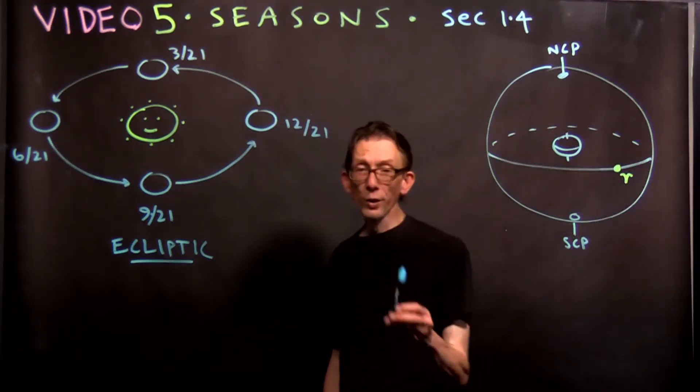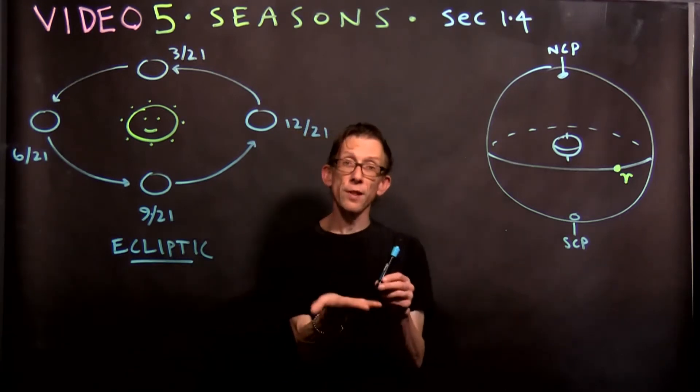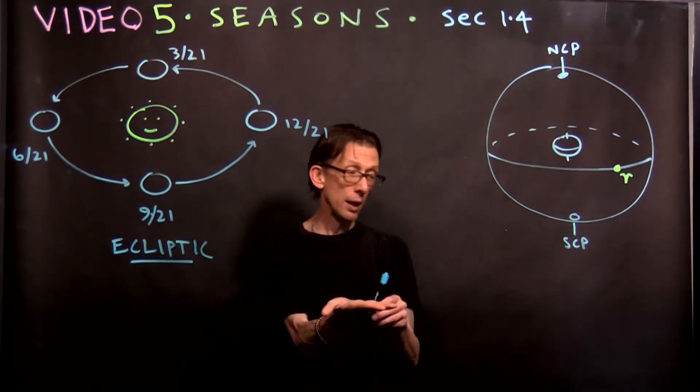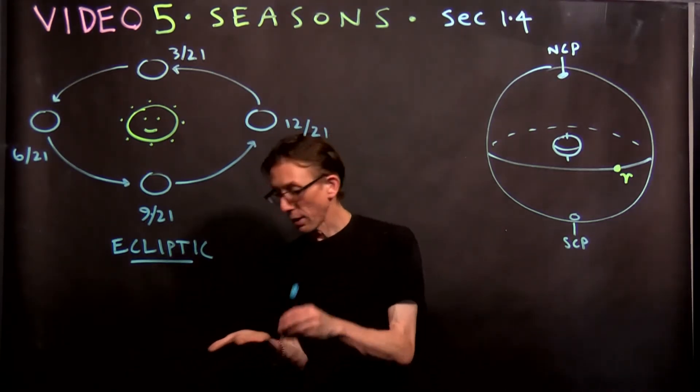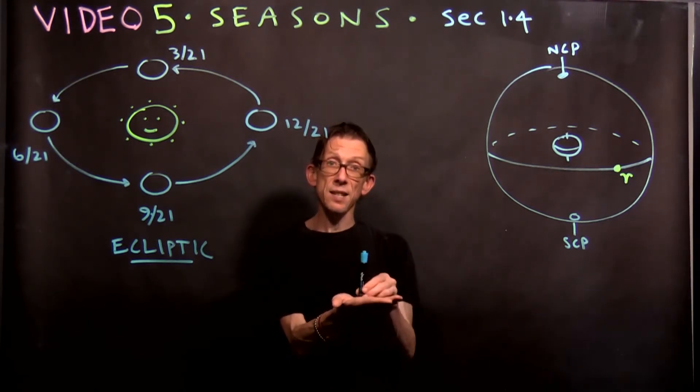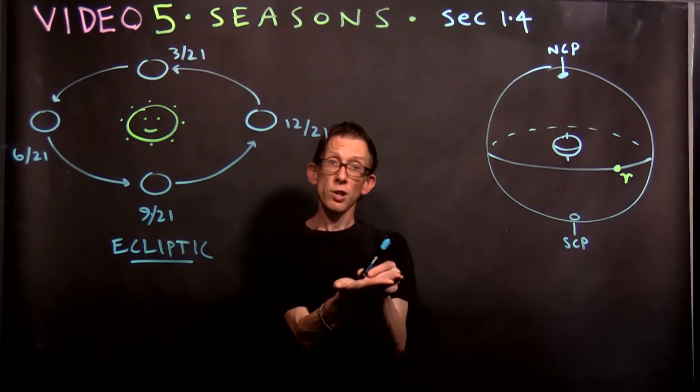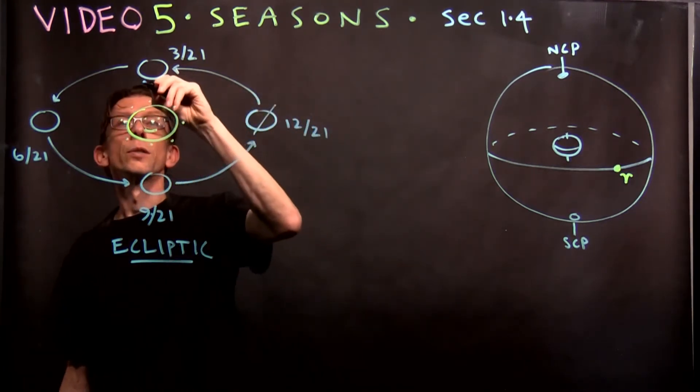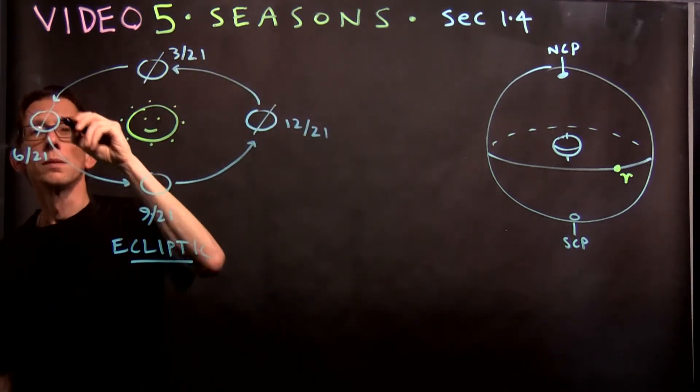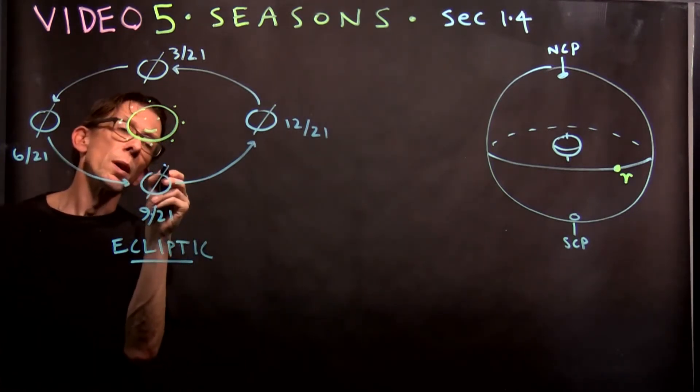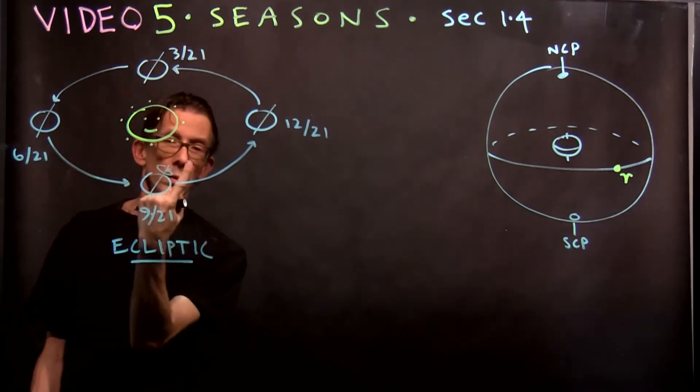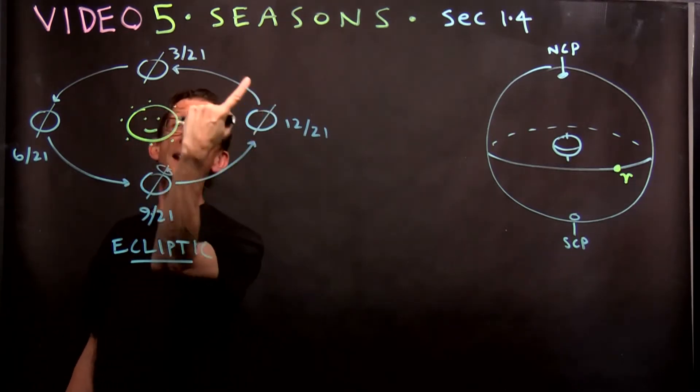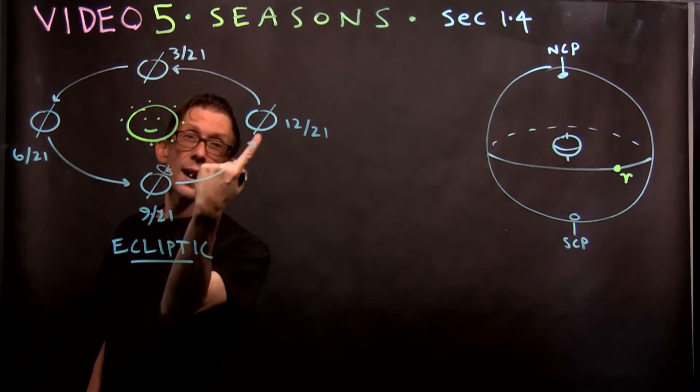So when we say that the earth is tilted, we mean that it's tilted relative to that tabletop. If this is the tabletop, I don't have a ball here with me, but the earth's axis is not perpendicular to that tabletop. It's tilted just a little bit, about 23 degrees. So in this picture, the axis of the earth's rotation is tilted like this.